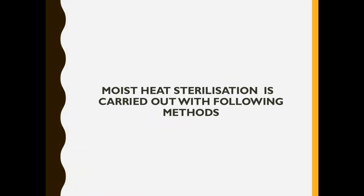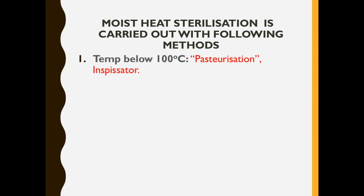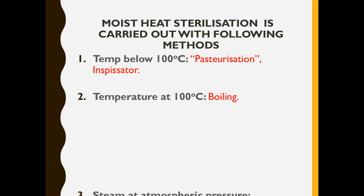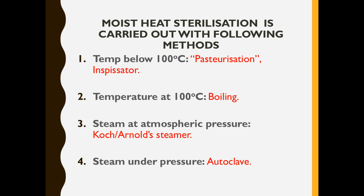Today we are going to study the moist sterilization which is carried out with different types of methods. Among these, we have already studied two: temperature below 100 degree centigrade and temperature at 100 degree centigrade. Today we are going to study the remaining two methods. The third one is the steam at atmospheric pressure and the fourth is the steam under pressure.